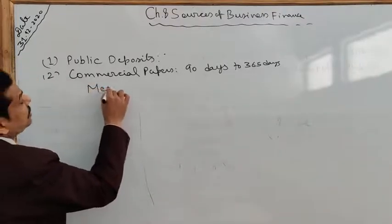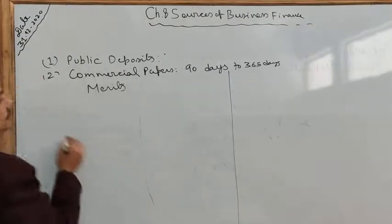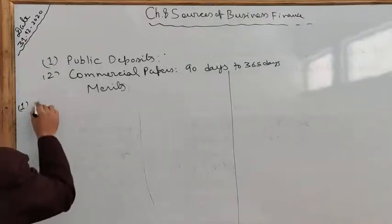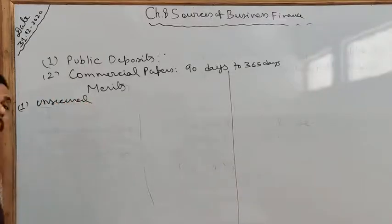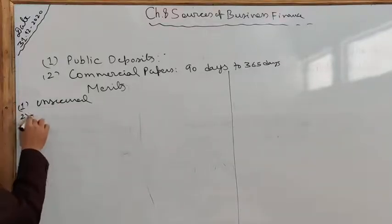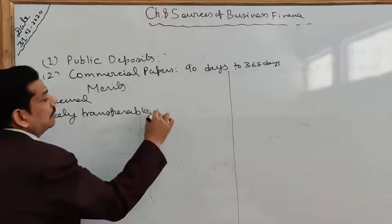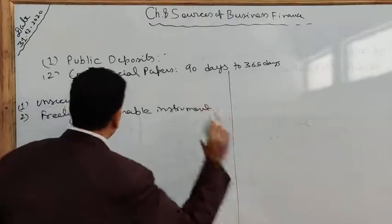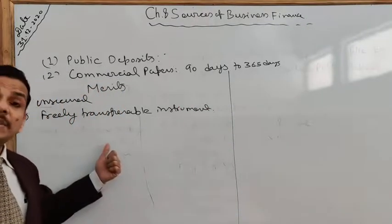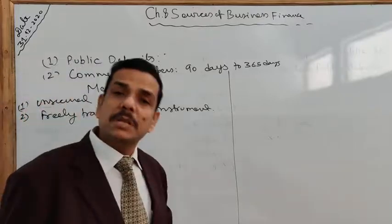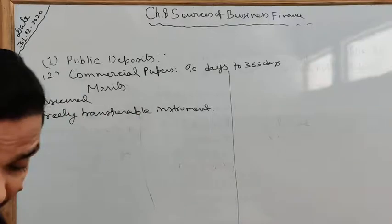Merits of commercial paper: as commercial papers are totally unsecured, they do not contain any restrictive condition as to the use of the money. It is a freely transferable instrument — meaning if you have bought the commercial paper of some company and are in need of funds, you can sell that same commercial paper to somebody else who is ready to buy it, and in this way raise funds for yourself.